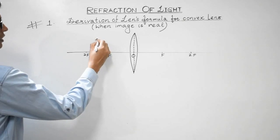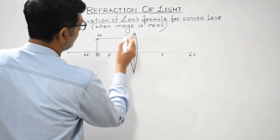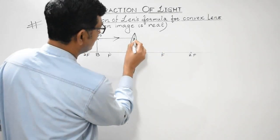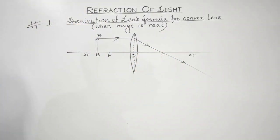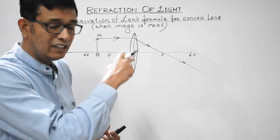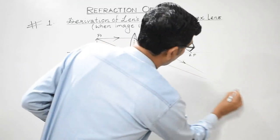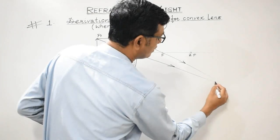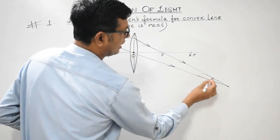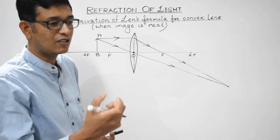Suppose the object is placed at AB. We have already done this case in the ray diagram. A ray which is parallel to the principal axis, after suffering refraction in the case of convex lens, will tend to pass through the focus. The second rule: the optical center is a point within the lens from where light, when passing through it, remains undeflected. So light from the object passing through the optical center remains undeflected.